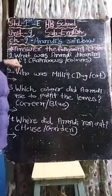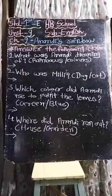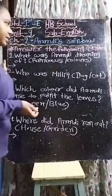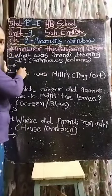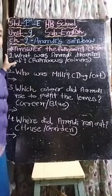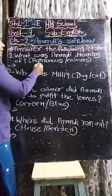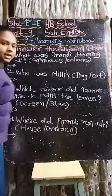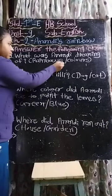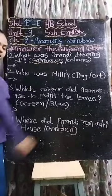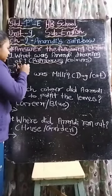First one: What was Anandi dreaming of? Ki Anandi kiska sapna dekh rahi thi? Rainbow ka aur colors ka? The answer is rainbow. Anandi rainbow ka sapna dekh rahi thi. So write down here: rainbow.